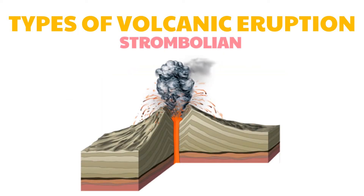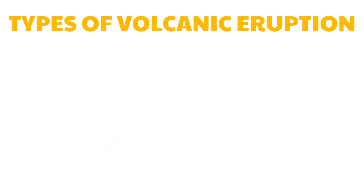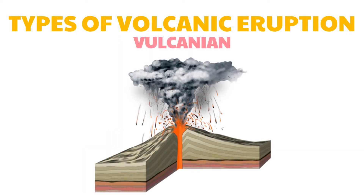Strombolian eruptions involve moderate bursts of expanding gases that eject clots of incandescent lava in cyclical or nearly continuous small eruptions. Because of such small frequent outbursts, Stromboli volcano — located on Stromboli Island off the northeast coast of Italy — has been called the lighthouse of the Mediterranean.